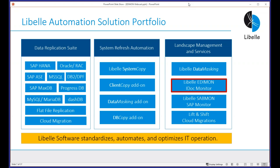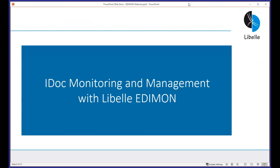We have three main lines of business overall. We see ourselves as a software company — developing, marketing, and supporting standard enterprise software. We have a data replication division, a system refresh automation division, and a landscape management division which encompasses data masking, IDOC monitoring, a small solution for SAP monitoring, and we'll talk about lift-and-shift cloud migrations — moving large amounts of data to Amazon Web Services, Google Cloud, or Azure.